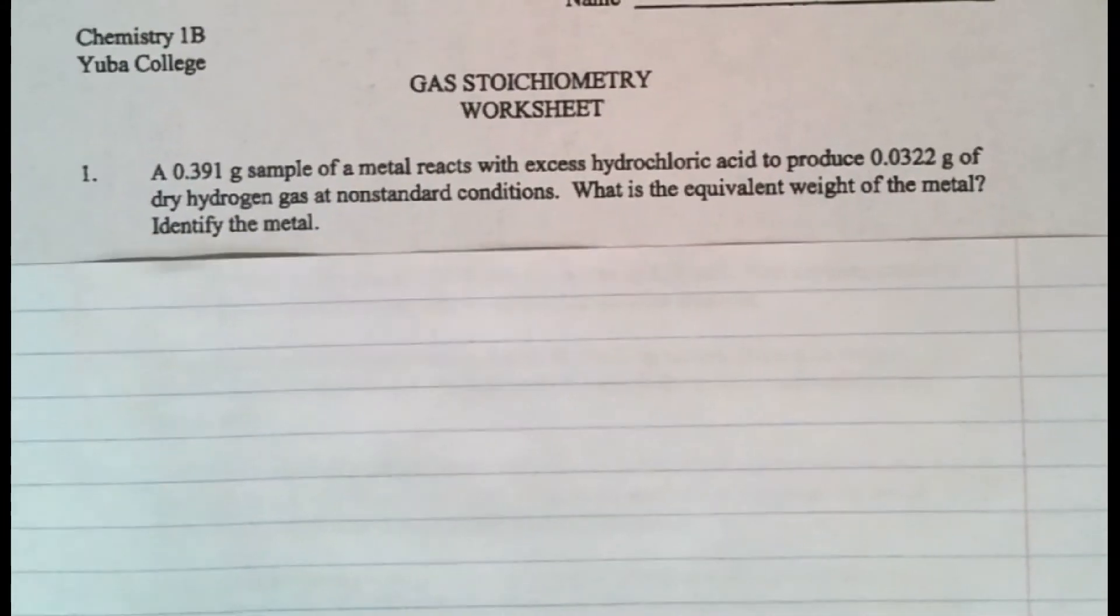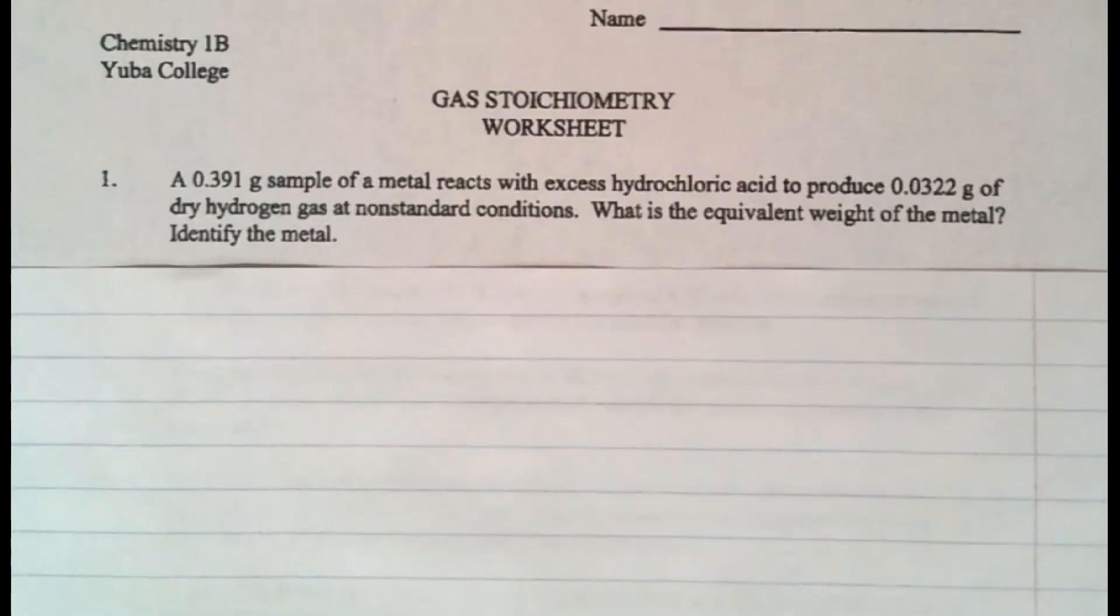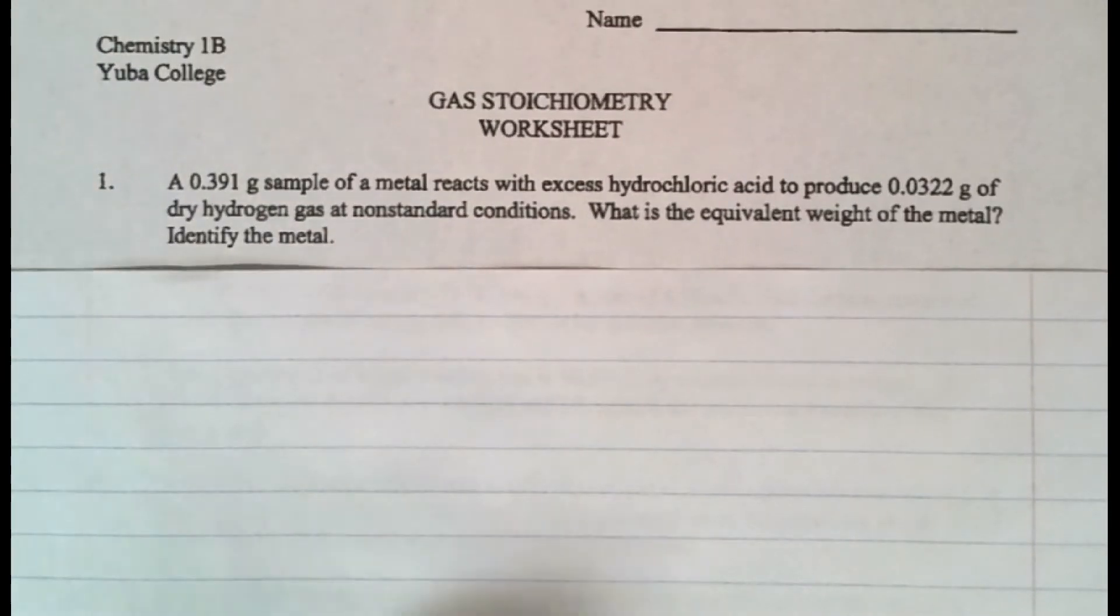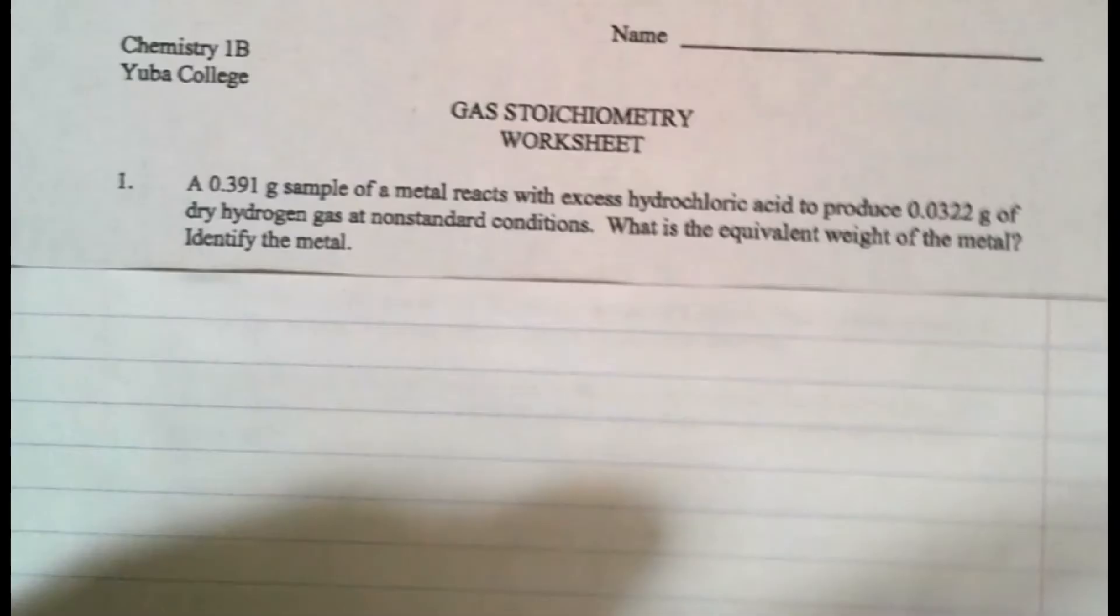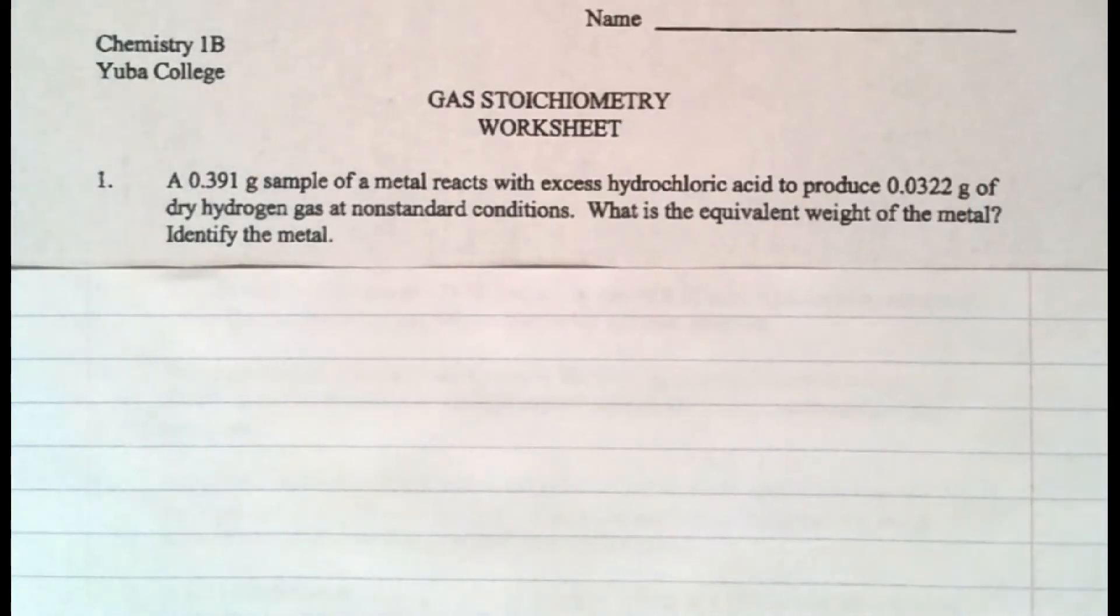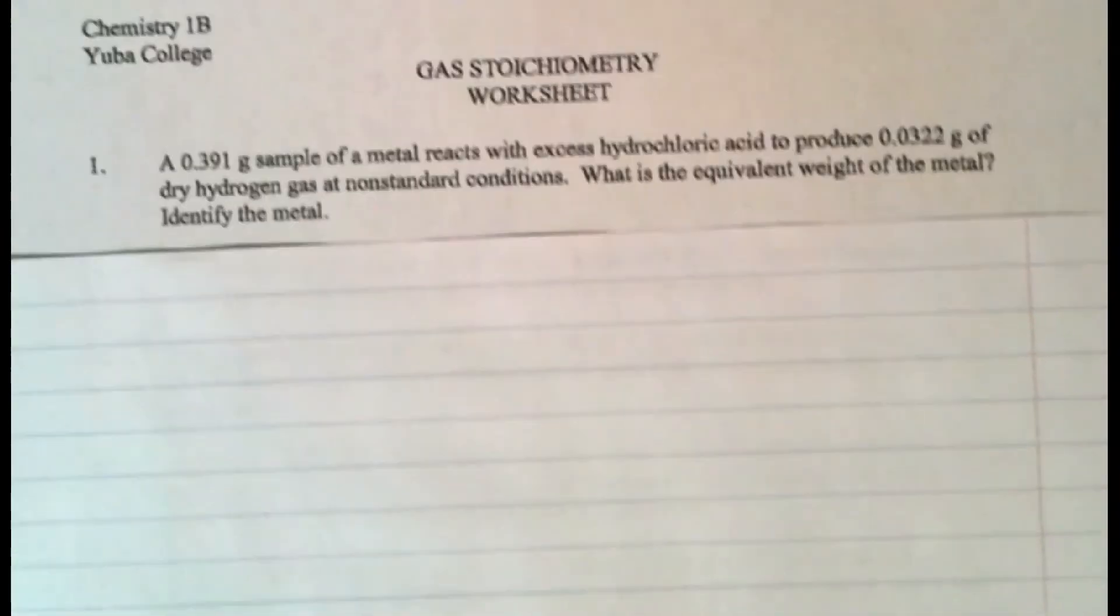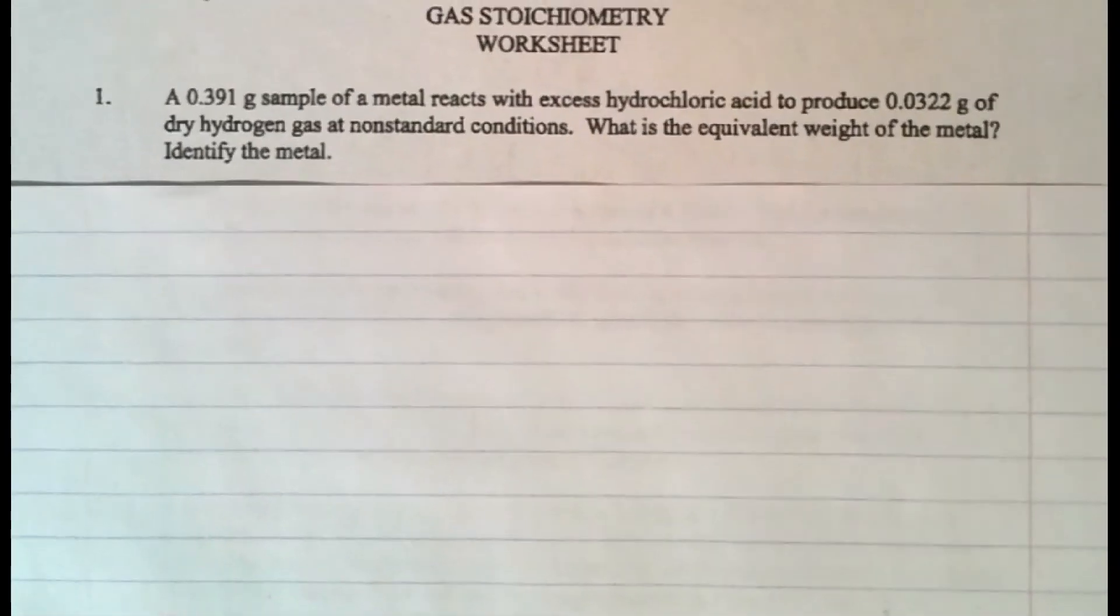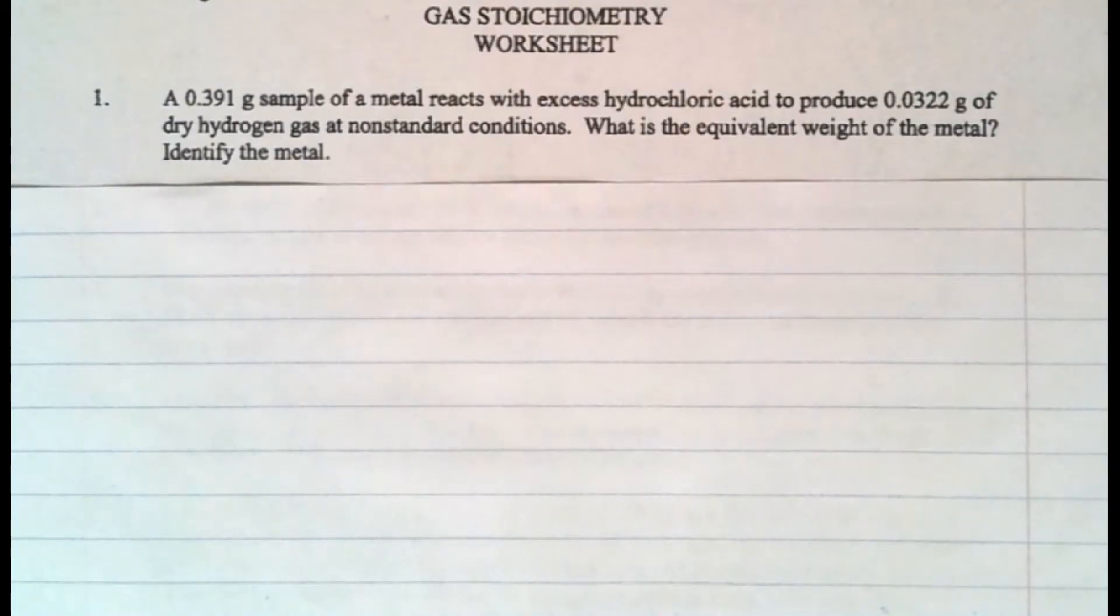And this particular problem is kind of a problem, but we'll get through it. So I look at it and it says a 0.391 gram sample of the metal reacts with excess hydrochloric acid to produce 0.0322 grams of dry hydrogen gas at a non-standard condition. What is the equivalent weight of the metal? Identify the metal.